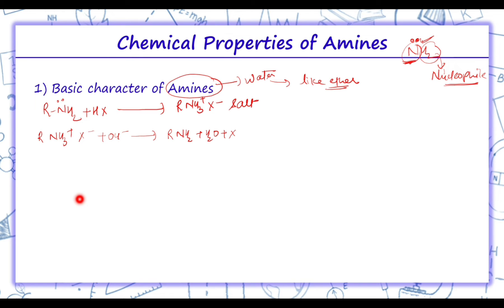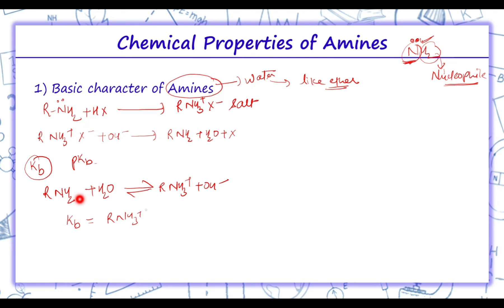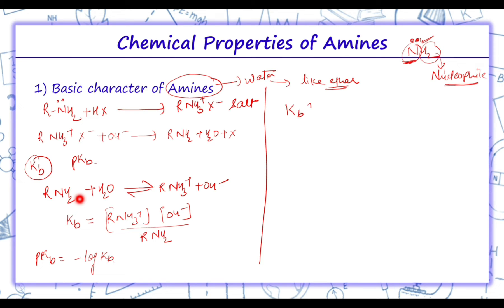The basic character of amines can be understood by the values of their Kb and pKb. The amine R-NH2 on hydrolysis forms R-NH3+ and OH−. The value of Kb is [R-NH3+][OH−] / [R-NH2]. pKb is calculated as minus log of Kb. Higher the value of Kb, smaller the value of pKb, and thus we can determine the basicity of particular amines.